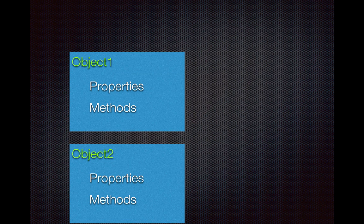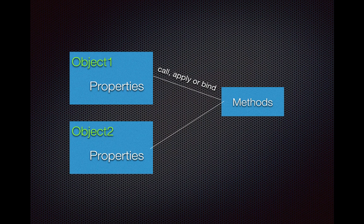Traditionally you have objects with properties and methods, and each object would have its own property and its own method. But in JavaScript you can do something more interesting — object 1 can have its own property, object 2 can have its own property, and you can write methods separately. Using call, apply, or bind you can use these methods on these objects, allowing you to write a common method for various objects.